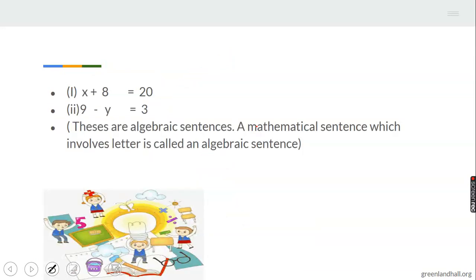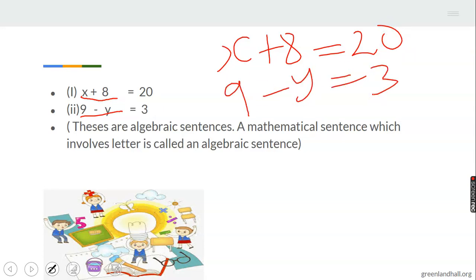Now we move forward. Here we have a letter and a number, so we have x plus 8 equals 20, and we also have 9 minus y equals 3. This is different from a number sentence - this is a mathematical sentence which involves letters and numbers, so we call it algebraic sentence.